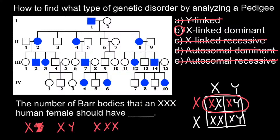Females produce one Barr body through X chromosome dosage compensation. If a female has one extra X chromosome, that extra chromosome is also deactivated. So a female with three X chromosomes still has only one active X chromosome and would have two Barr bodies — that is our answer. By the way, males can also have an XXY genotype due to nondisjunction during meiosis, and such a male would also make one Barr body in every cell.